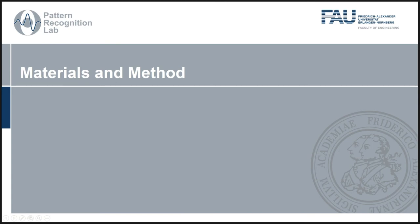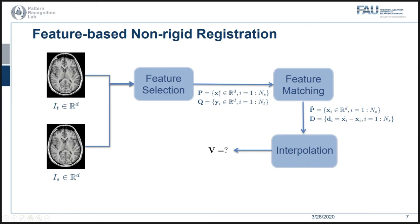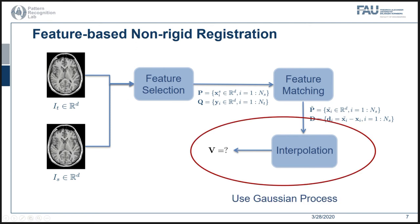Now we come to the method and material part. Basically, the goal of image registration is to find an optimal dense displacement field V, which maps the source image to the target image. First, in the feature extraction step, two sets of sparse features P and Q are selected from the source and target images. In the subsequent feature mapping step, the source feature set P is updated to a corresponding set P-tilde, which is aligned to Q. Consequently, a sparse displacement field can be calculated, and in the last step, the sparse field D is interpolated to the dense field V. For this purpose, we use Gaussian process in this work.